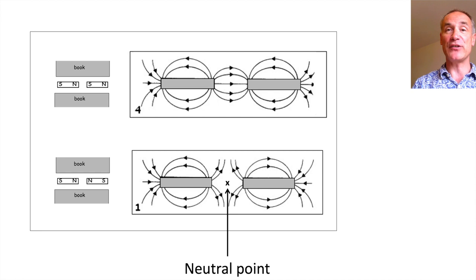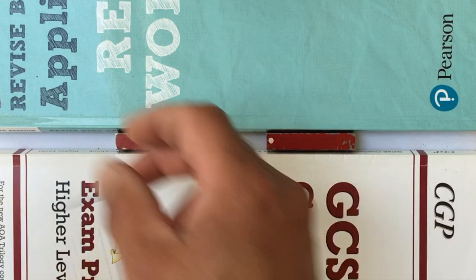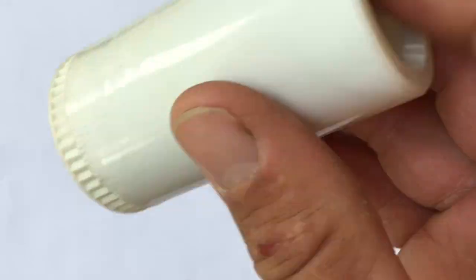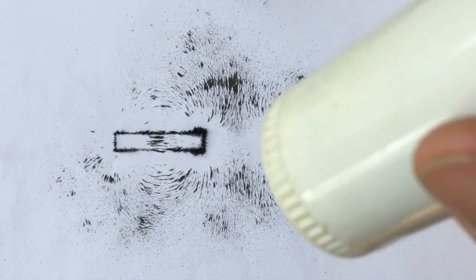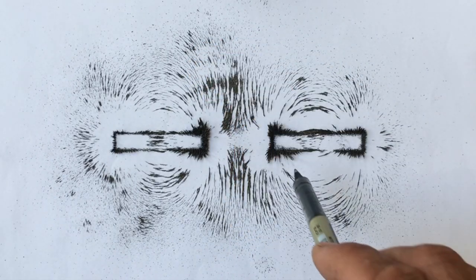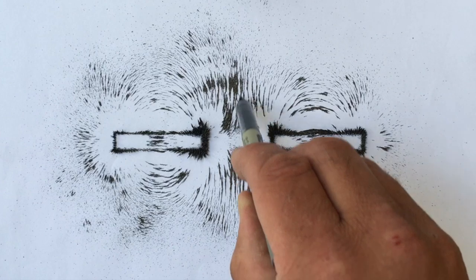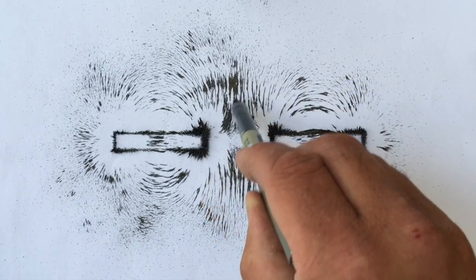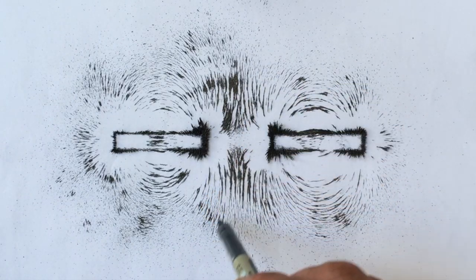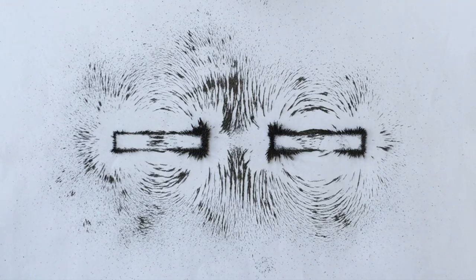Let's have a look at me plotting the repulsion one as well. You can see the north and north are repelling — now let's look at what the magnetic field looks like. You can see the field lines between the north poles bend away from each other, almost like they're trying to spring apart, and in the centre you've got a very weak field.